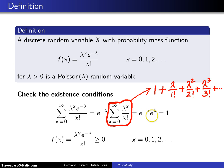So this entire summation turns out to just be e to the lambda, and e to the minus lambda times e to the lambda is e to the 0 power, which is 1. That means our first existence condition is satisfied.